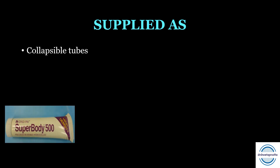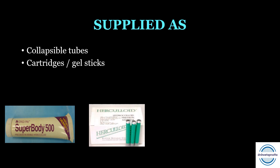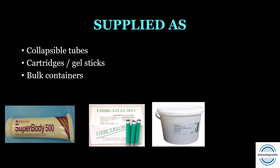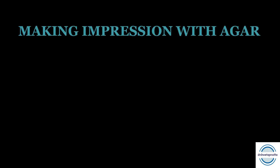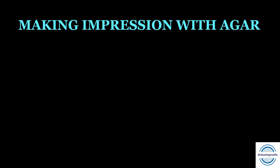Agar is mainly supplied in three forms: first, the gel in collapsible tubes mainly used for making impressions; second, cartridges and sticks which is the syringe material; and third, in bulk containers which are mainly used for the duplication of casts.